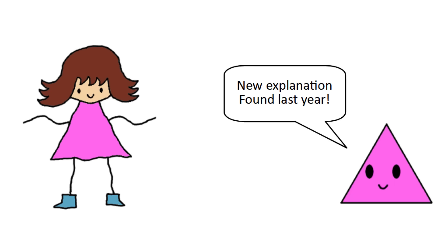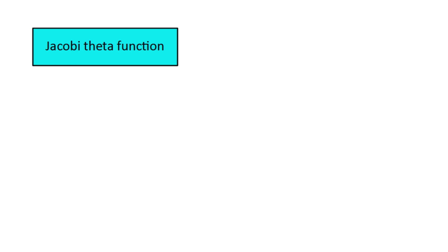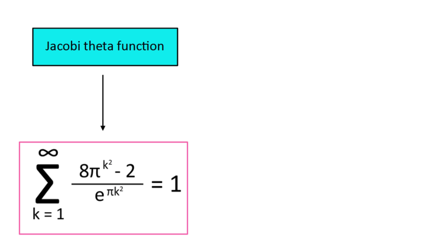Basically, due to something called the Jacobi theta function, there's an identity where the infinite sum of 8 pi k squared minus 2 over e to the pi k squared is exactly 1. The terms get small so fast that the first term is already approximately 1. This means e to the pi is approximately 8 pi minus 2.